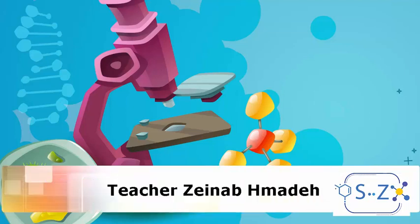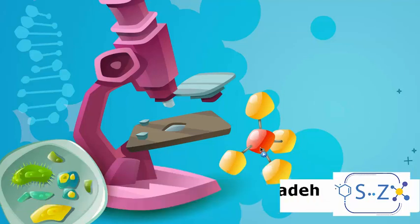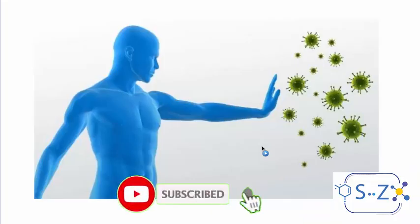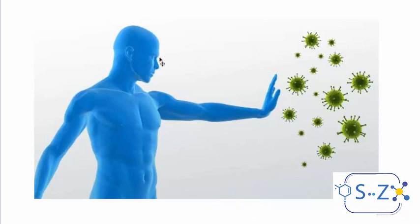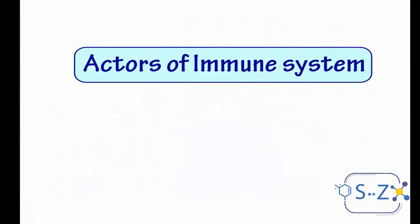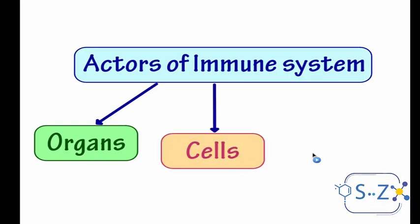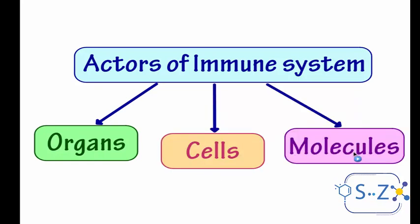Today we're going to start a new video about actors of the immune system. The immune system is responsible for defending our body against any pathogen, to protect our body from diseases and any harmful substance. The actors of the immune system responsible for this function are three: first, there are organs; then there are cells; and there are molecules.